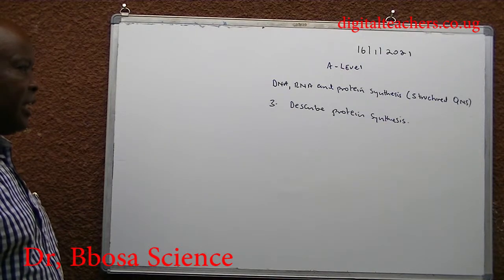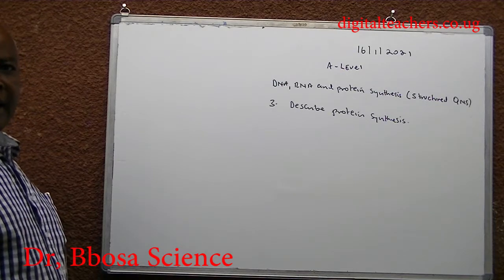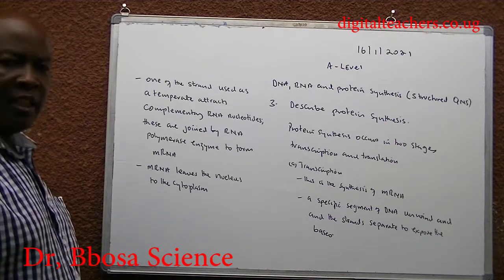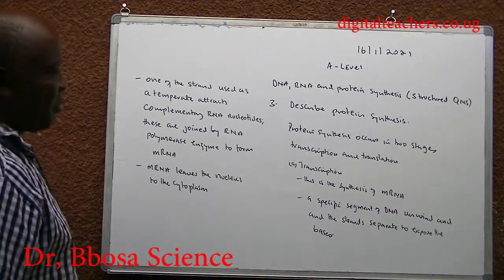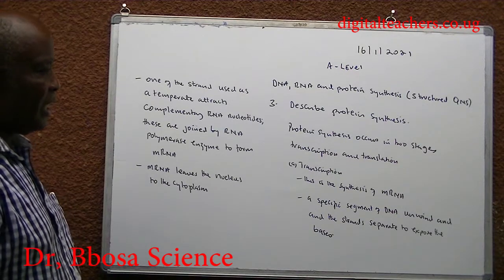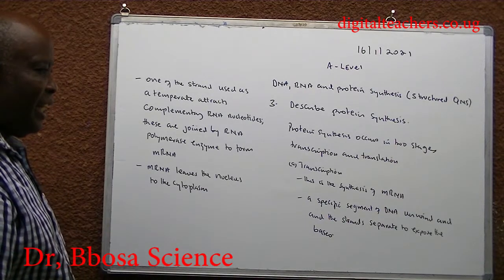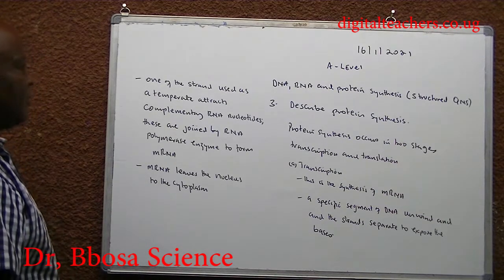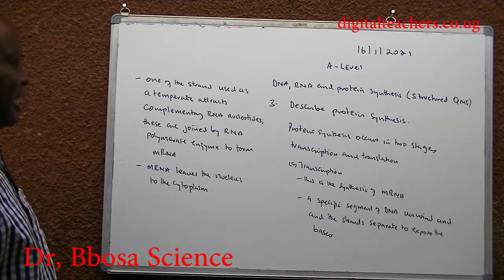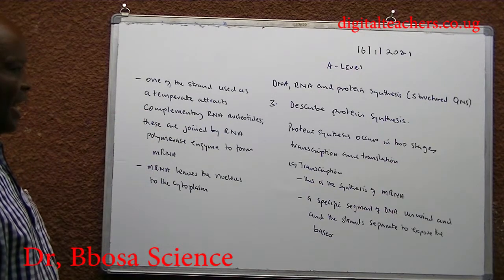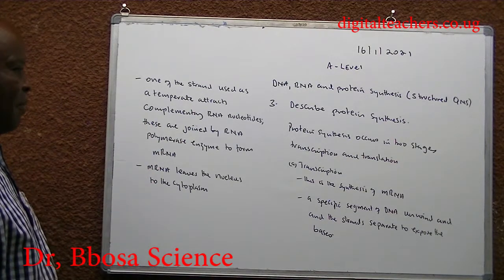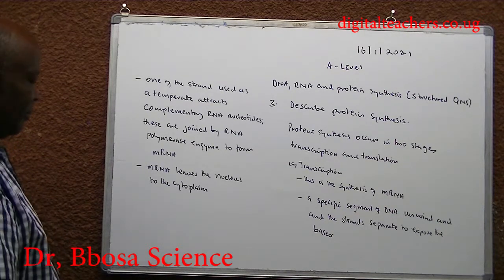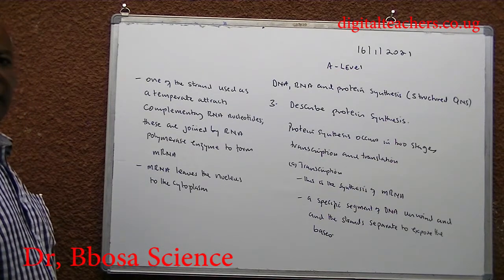Number 3: describe protein synthesis. You can pause and answer. Protein synthesis occurs in two stages: transcription and translation. Transcription is the synthesis of messenger RNA. A specific segment of DNA unwinds and the strands separate to expose bases. One of the strands is used as a template and attracts complementary RNA nucleotides. These are joined by RNA polymerase enzyme to form messenger RNA. Messenger RNA leaves the nucleus to the cytoplasm.